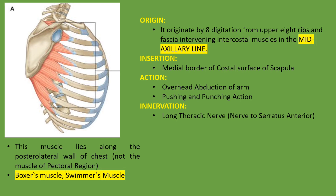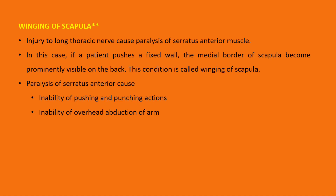Both pectoralis minor and serratus anterior have almost similar actions. A short note topic related to this is winging of the scapula. Injury to the long thoracic nerve can cause paralysis of the serratus anterior muscle. If the serratus anterior is paralyzed, the scapula will protrude and hang outward. In this case, if a patient pushes against a fixed wall, the medial border of the scapula becomes prominently visible on the back — this condition is called winging of the scapula.